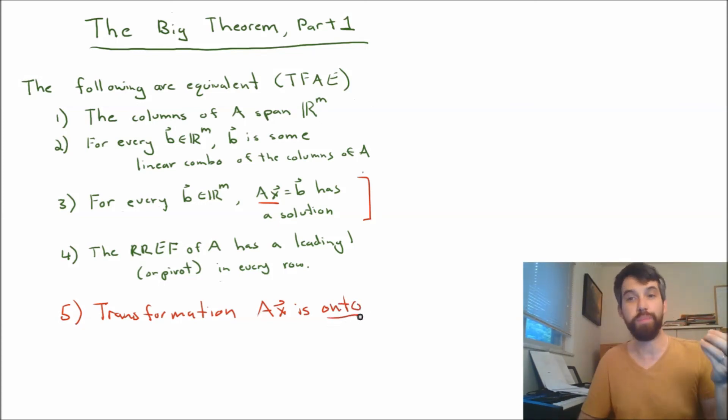Every single vector b in the codomain is hit by something by the x. This Big Theorem, which we now get to call part two, has sort of an equivalent side for all of these five properties. They all change, and in this particular case, we could ask, what if it wasn't a transformation that was onto, but our transformation was one-to-one, and then all of these conditions are going to change appropriately. But I'm going to leave that as something for you to think about.